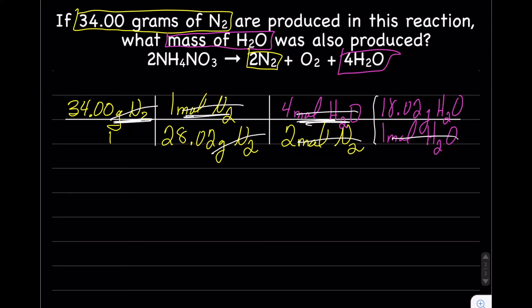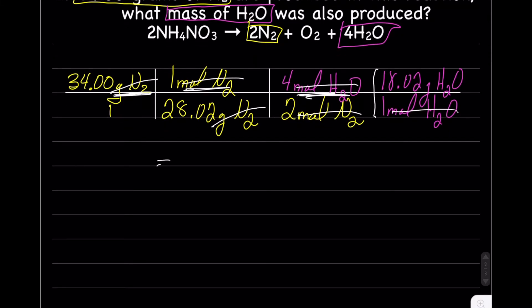So now we are done, except for multiplying across the top, bottom, dividing, figuring out sig figs and stuff. So when I multiply it across the top, I got 2450.72 grams H2O. And when I multiply it across the bottom, I got 56.04. Then when we divide, end up with 43.73162 grams H2O.